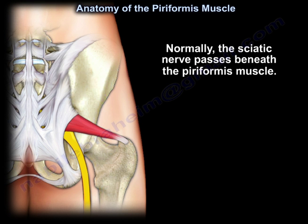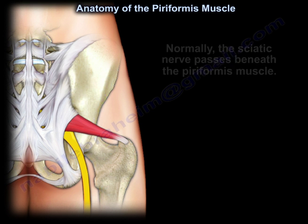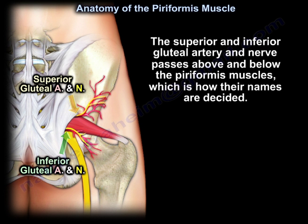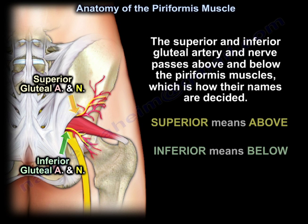Normally, the sciatic nerve passes beneath the Piriformis Muscle. The superior and inferior gluteal artery and nerve pass above and below the Piriformis — that is how their names are determined. Superior means above; inferior means below.